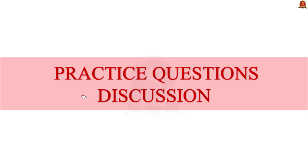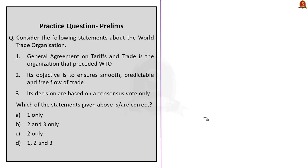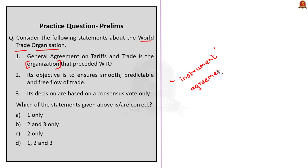Now we are at the practice question discussion. The first question is about WTO, with three statements to identify the correct one. Statement 1 says GATT is the organization that preceded WTO — this seems deceptively right, but it is wrong because of the word 'organization.' GATT governed trade for a long period until 1995 but was merely an agreement, never an organization. So statement 1 is wrong, eliminating options A and D. Statement 2 — WTO's objective is to ensure smooth, predictable, and free flow of trade — is correct from our discussion.